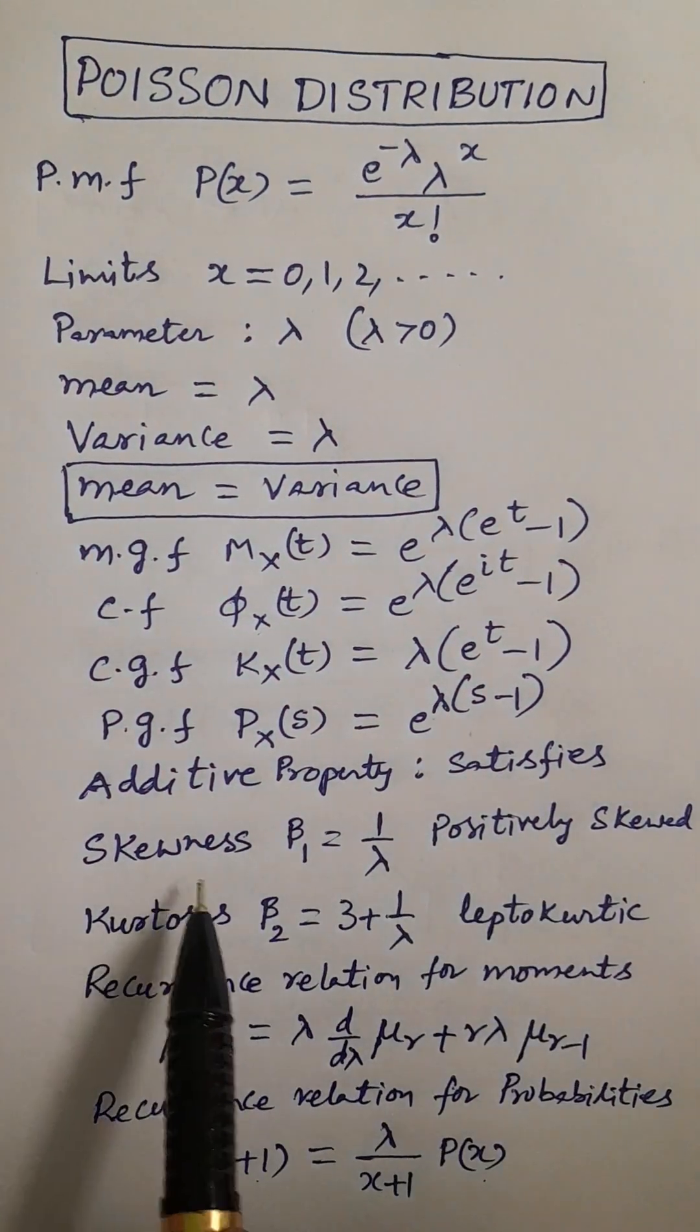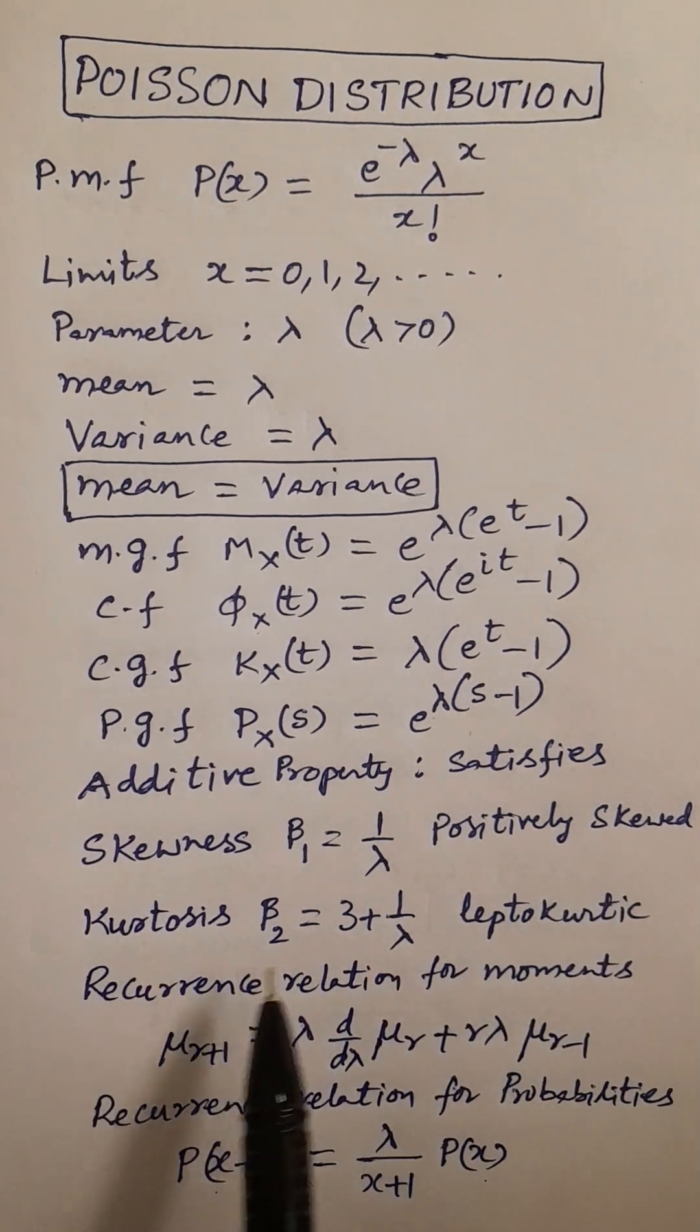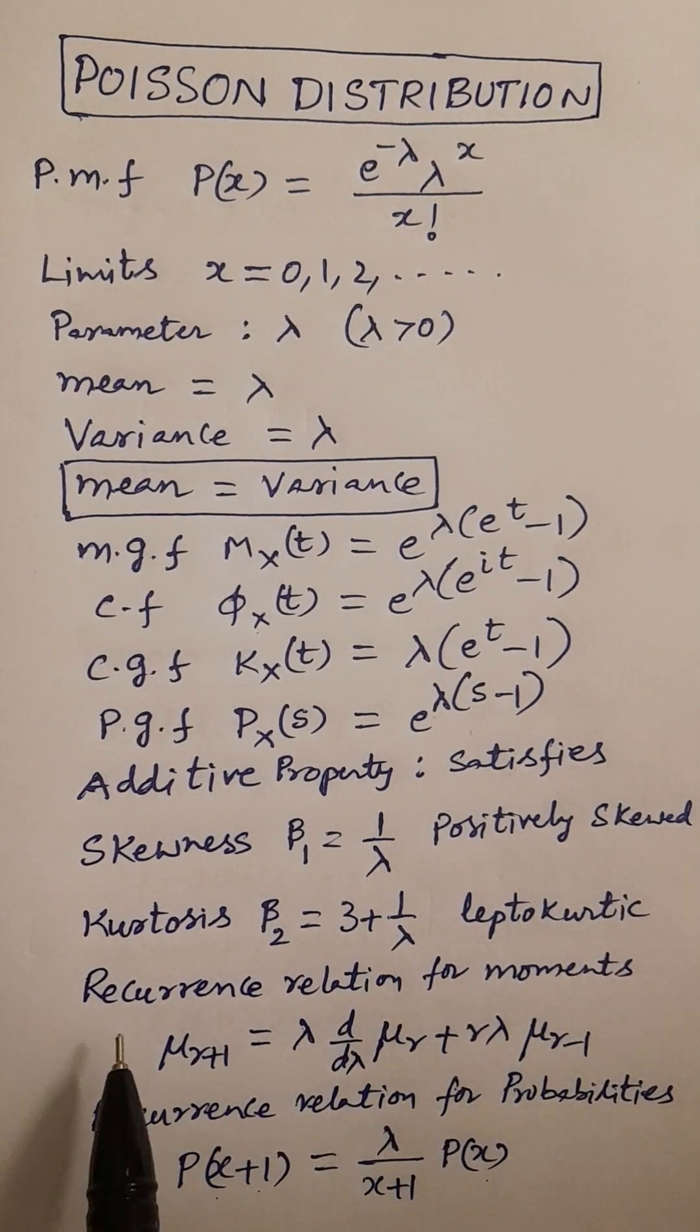Additive property satisfies. Skewness: beta 1 is equal to 1 by lambda, positively skewed distribution. Kurtosis: beta 2 is equal to 3 plus 1 by lambda, leptokurtic distribution.